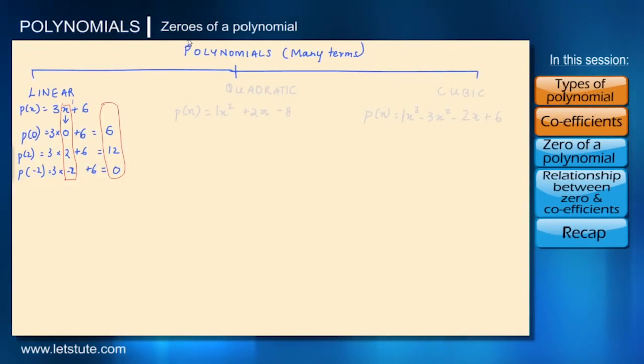So when the polynomial is equal to 0, the value of x at that point that is minus 2 is mathematically called zero of a polynomial or root of a polynomial.